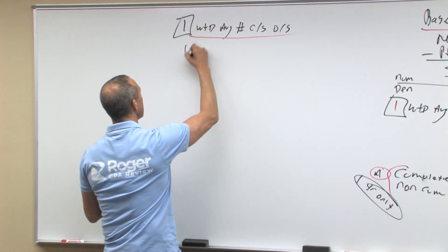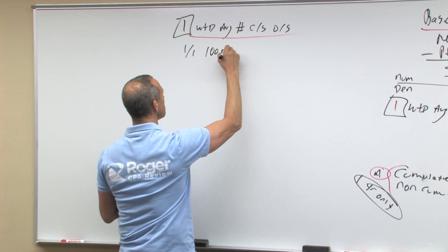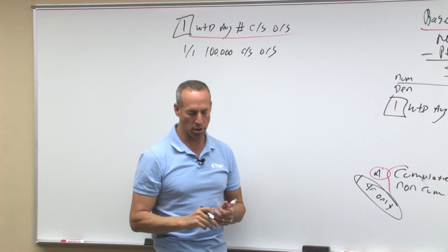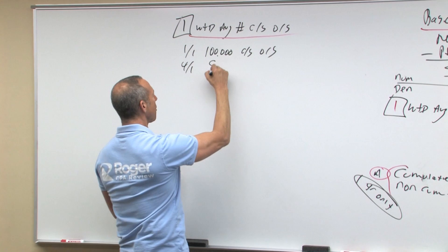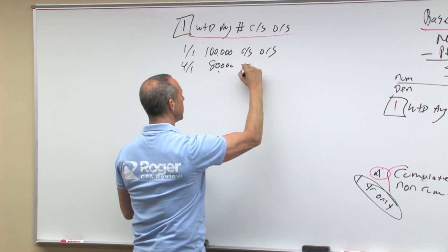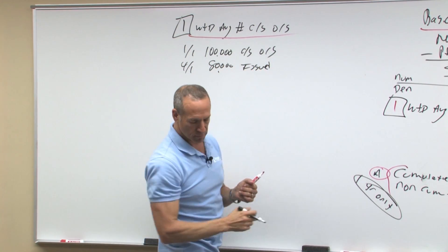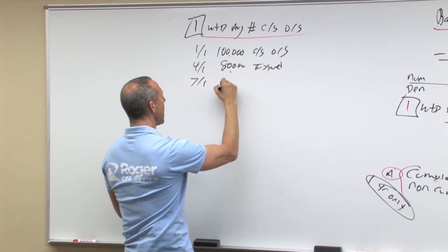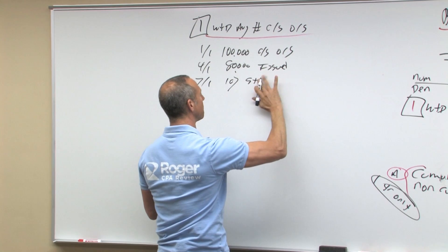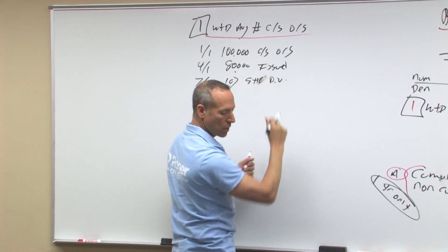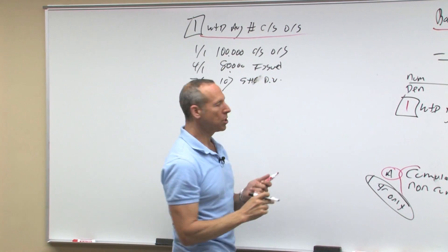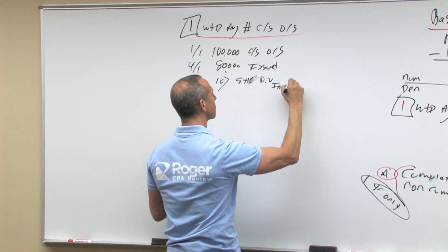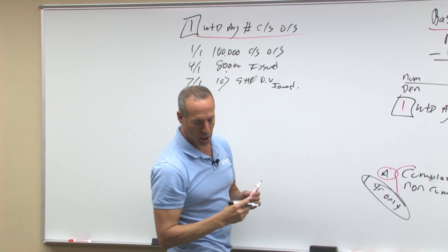Let's say for example, on January 1st, I have 100,000 shares of common stock outstanding, and you'll see this in your notes. On April Fool's Day, another 80,000 shares are issued. On July 1st, a 10% stock dividend is issued.